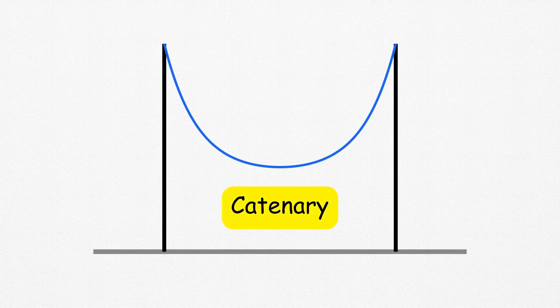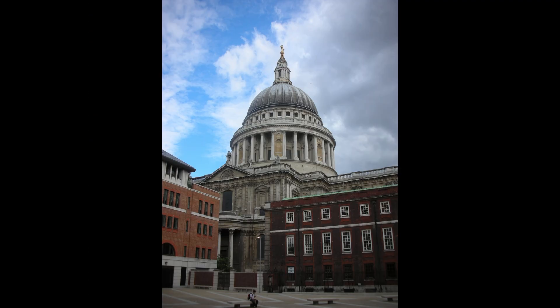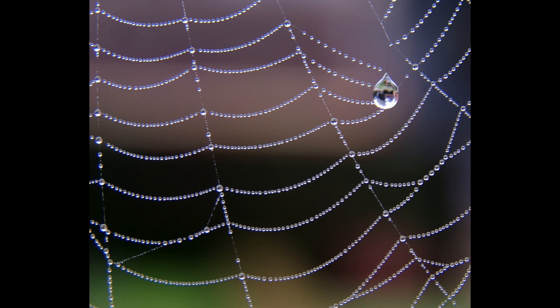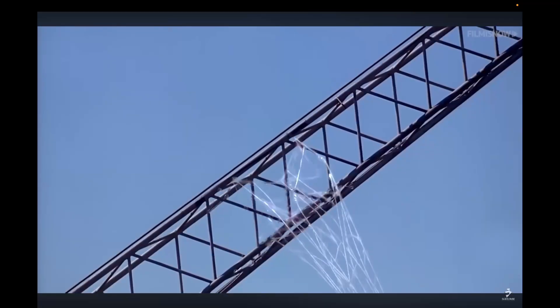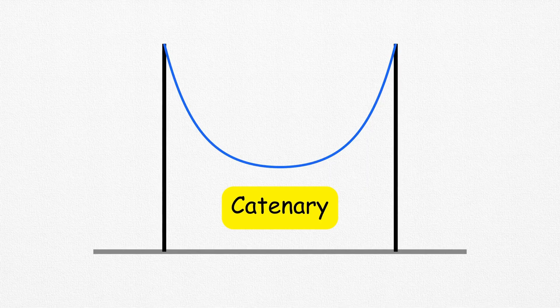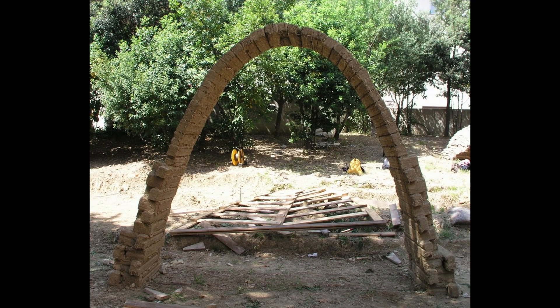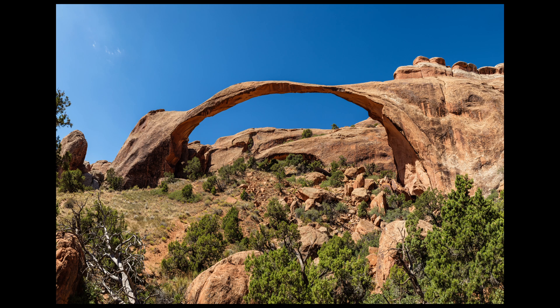Catenaries are incredibly stable structures found in nature, ancient architecture, rocky formations, and even spiderwebs, where multiple strings naturally form catenary curves. The key feature of a catenary is that it minimizes gravitational potential energy, which is why it appears so often in nature.